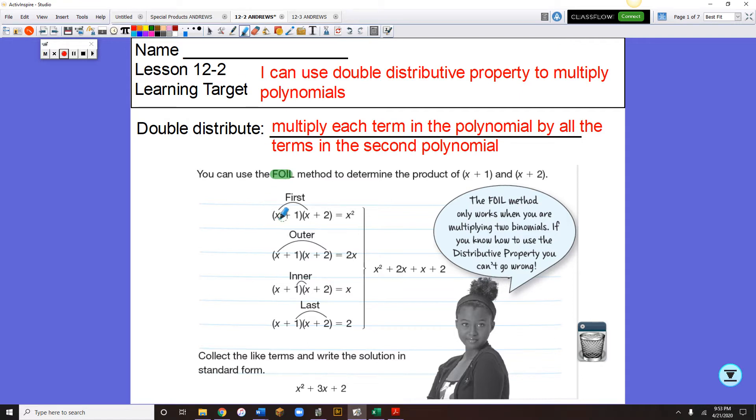And how FOIL works is you multiply x times x to get x squared. That's F for first, the first term in each polynomial. Outer means multiply the x and the plus 2 and get a positive 2x.